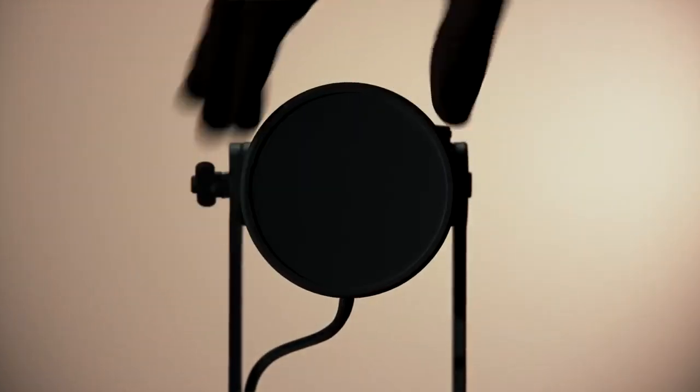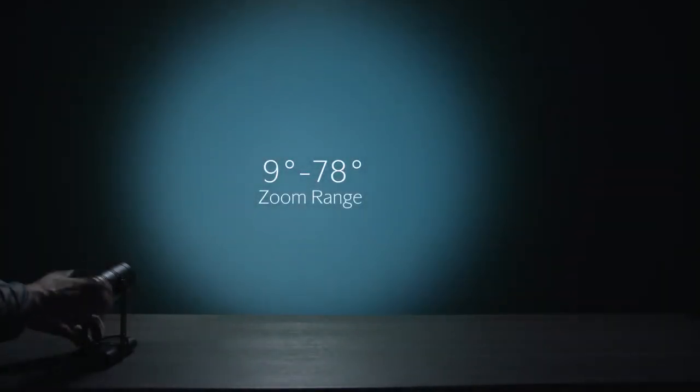Using the unique, easy-to-use twisting zoom mechanism on the rear of the fixture, you can adjust the beam angle within an impressive range of 9 to 78 degrees. The zoom position markers on the fixture make fixture-to-fixture referencing quick and easy.